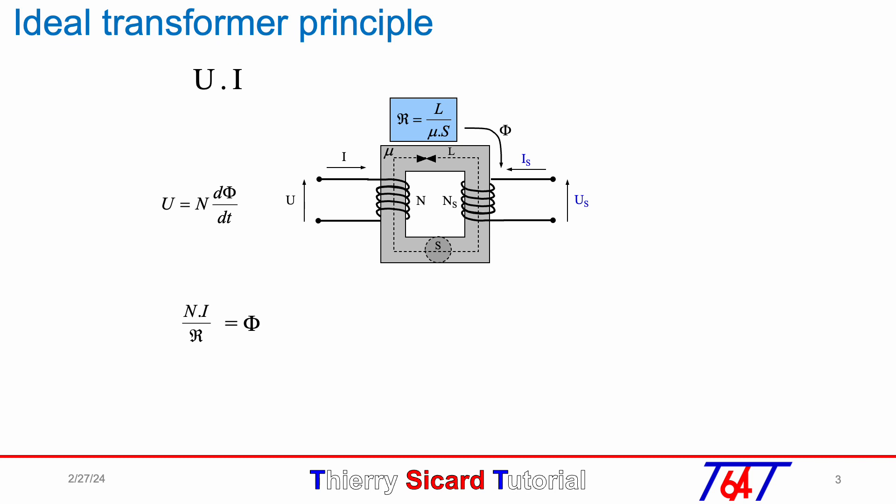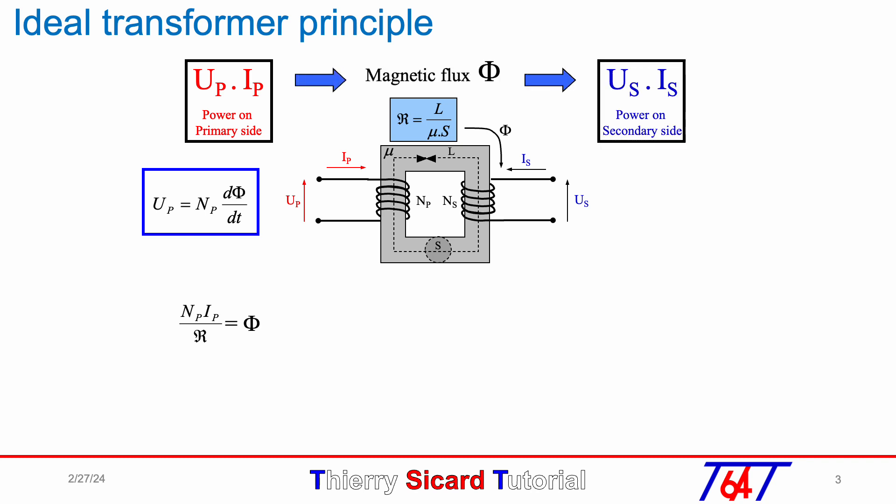We need to change U and I to U_P and I_P and N_P for the primary coil. The power U_P times I_P on the primary side goes through the magnetic flux to the secondary power U_S times I_S, with U_S equal N_S times dΦ/dt. Of course, Φ equals N_P times I_P over reluctance.